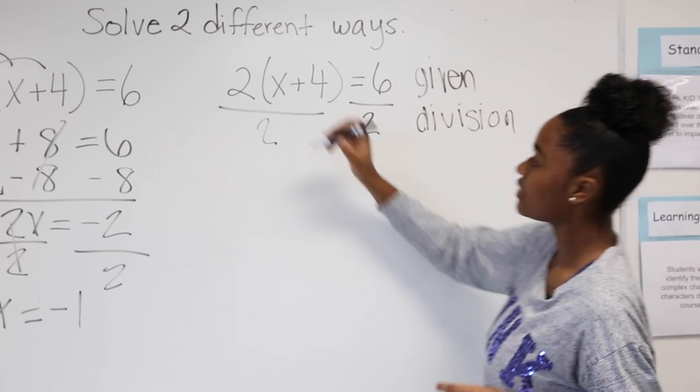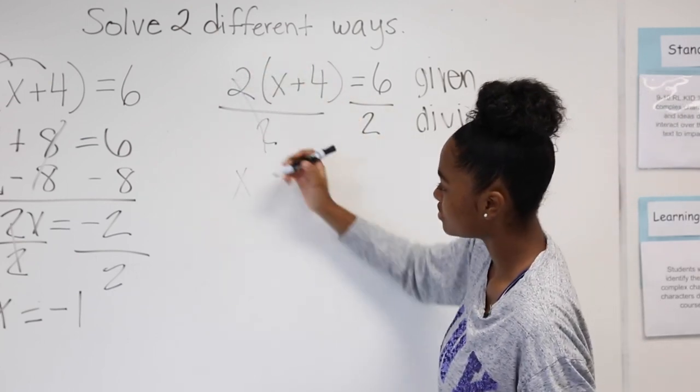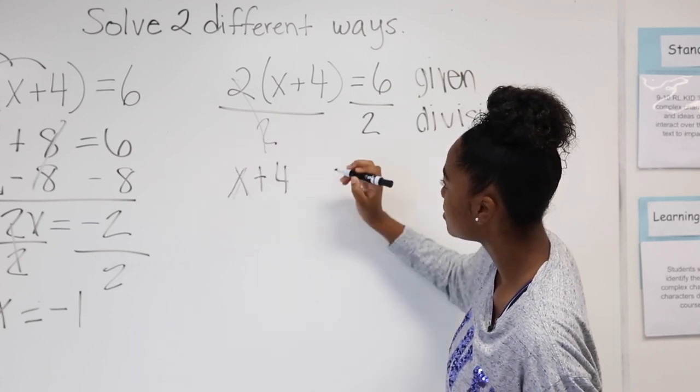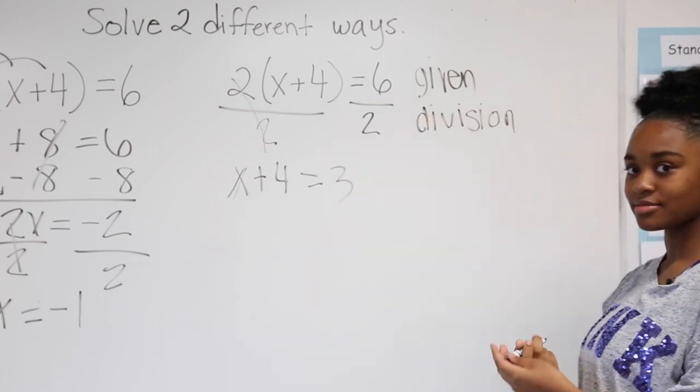That will cross out. So you bring the x plus 4 equals - that's 3. So 6 divided by 2 is 3.